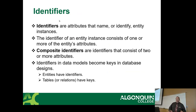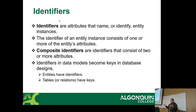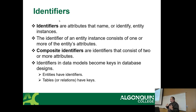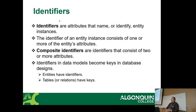An identifier is a way of uniquely identifying an instance of an entity. Student number is the school's one; employee number is mine as far as Algonquin is concerned. The identifier always consists of at least one attribute of the entity. Composite identifiers exist when the only way to uniquely identify something is by combining two attributes — not very common, but they exist, and you normally try to avoid them as much as possible because it gets complicated.